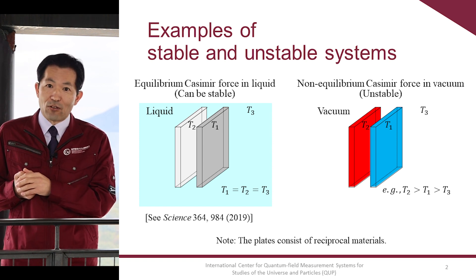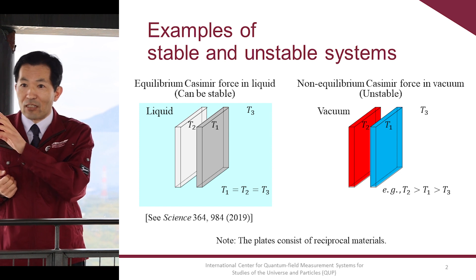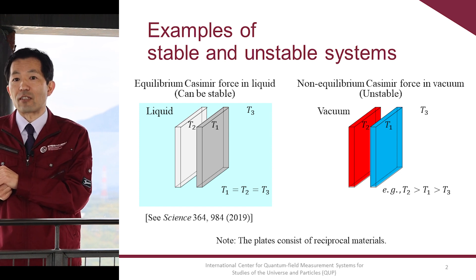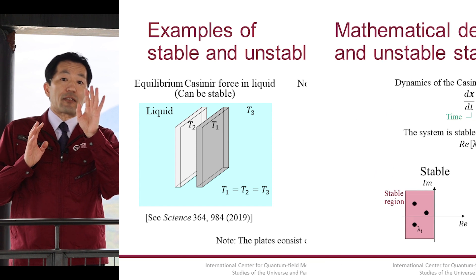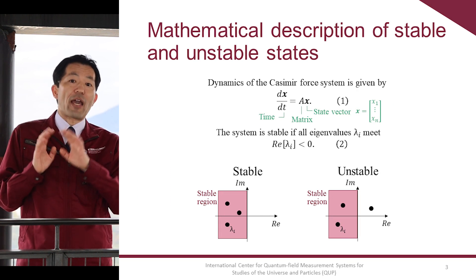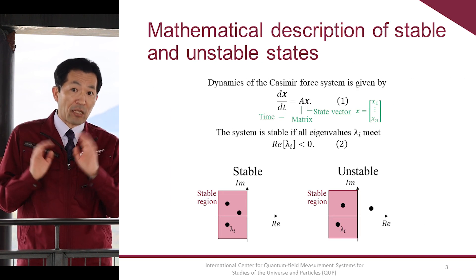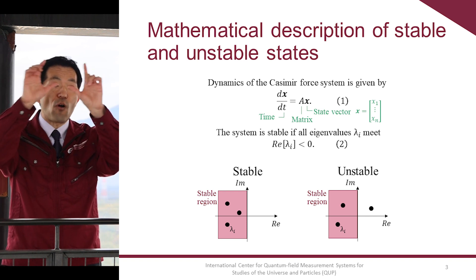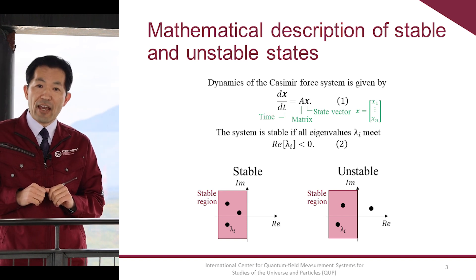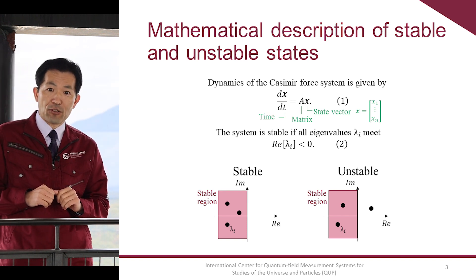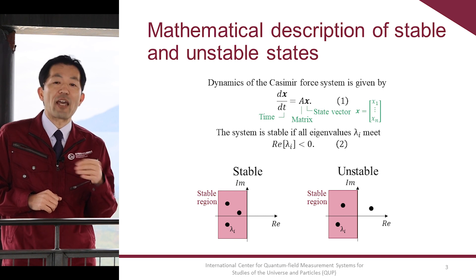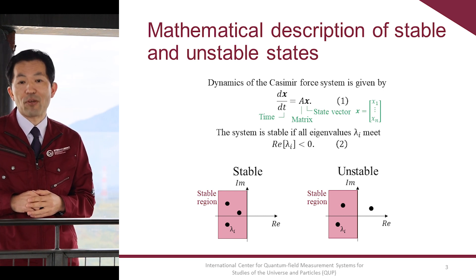The experimental demonstration of stable Casimir Force was reported in 2019. The stable and unstable states can be expressed mathematically by using the simple form dx/dt = Ax, where x is the state vector including position, velocity, and temperature, A is a matrix, and t is time.